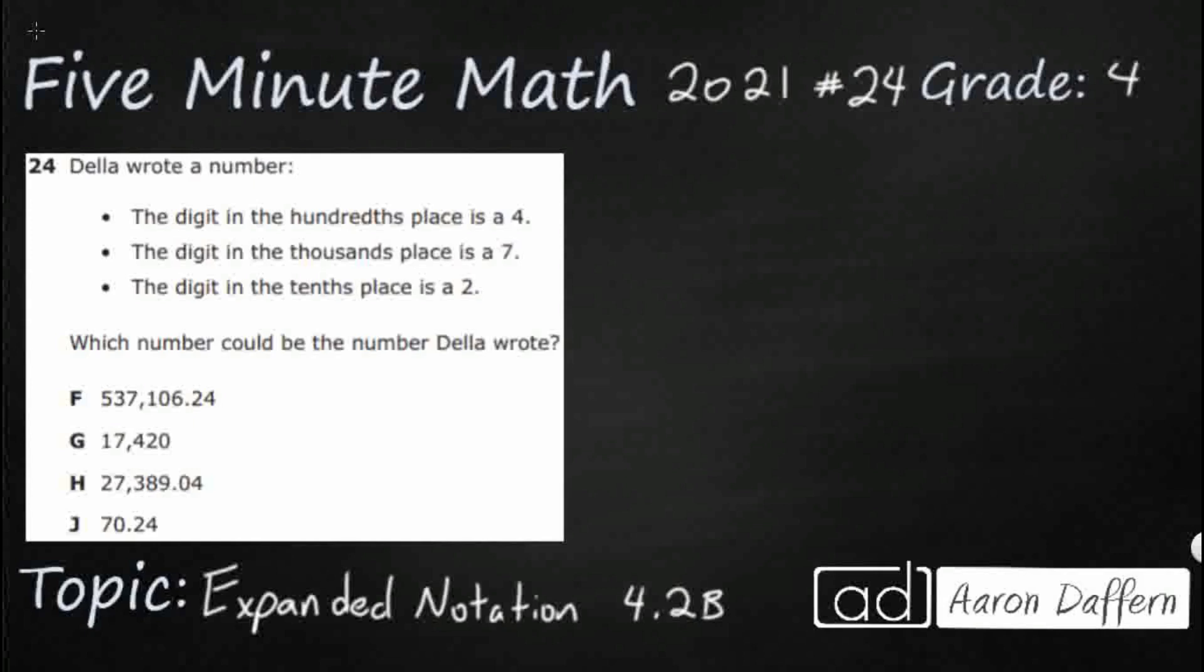So we have Della and she is writing a mystery number. The digit in the hundredths place is a 4, the digit in the thousandths place is a 7, and the digit in the tenths place is a 2. Look at the range of our numbers. We've got numbers that go all the way up to the hundred thousands and that are as small as the tens.